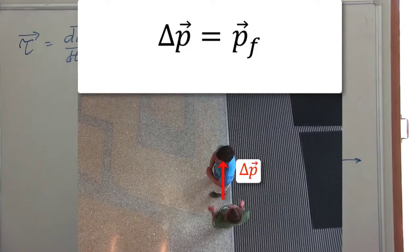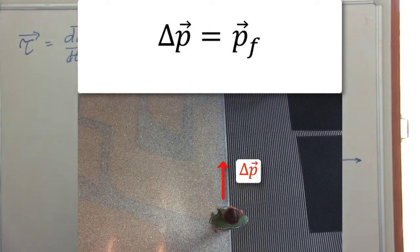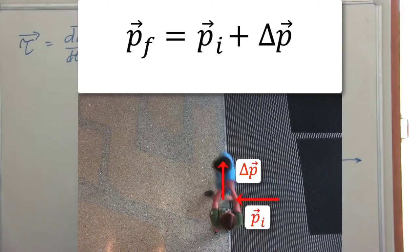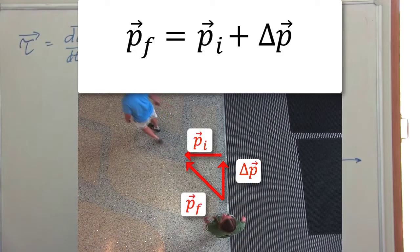If you get pushed while you're not moving, you just go in the direction that you were pushed. However, if you're already moving, the impulse that you receive is added to your initial momentum to give you your final momentum. And this determines your direction.